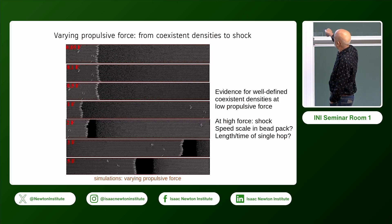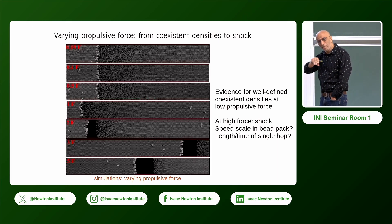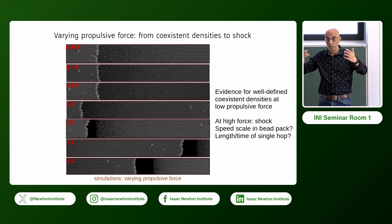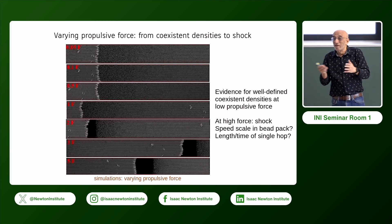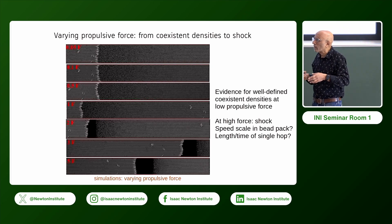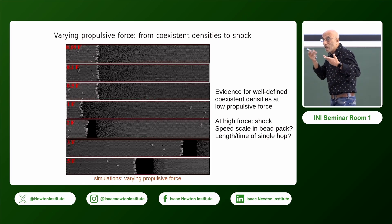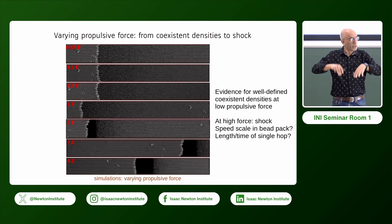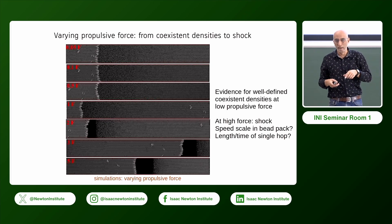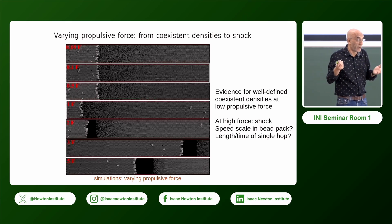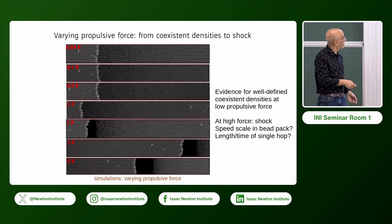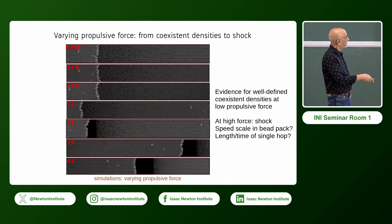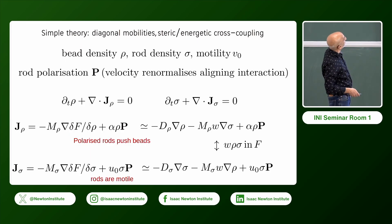There seem to be fairly well-defined co-existing densities, at least at low force. At high force there is the shock. The bead gas isn't a bulk gas with a sound speed — it's a bunch of things on a substrate, so density travels by diffusion. You have to ask what is the speed scale that says you're moving too fast or too slow. Maybe it's just the elementary space step divided by the shaking time — that's a velocity scale — but I'm not sure. It's not a fluid with sound waves on its own.